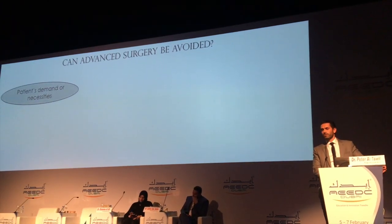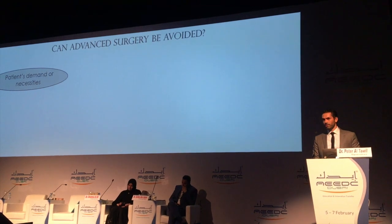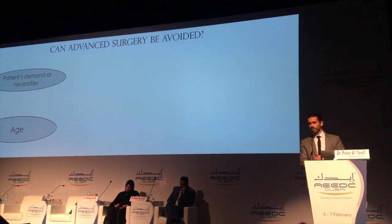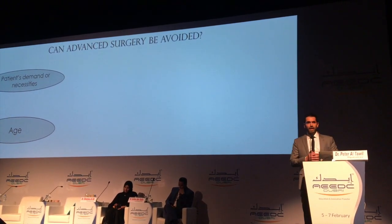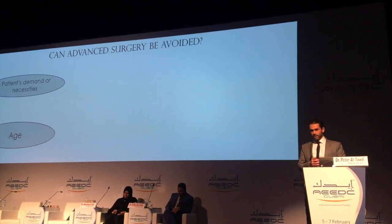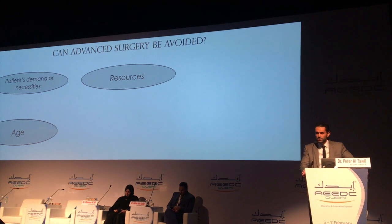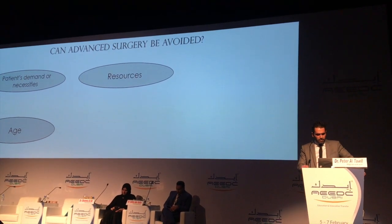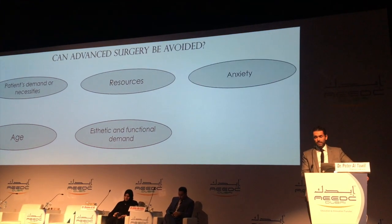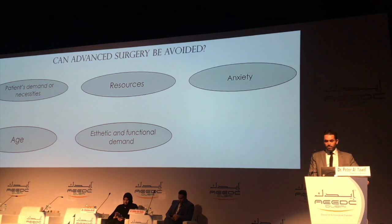First, is the patient coming to you — can you find them a better viable option and still get the same result without going to advanced surgeries? The age of the patient: patients are getting older, they have more systemic problems, so they don't want advanced surgeries. The resources — we all know how these advanced surgeries cost money. Static demands and function, we talked about it. The anxiety — we know how much patients are anxious about going to advanced surgeries.